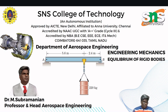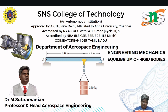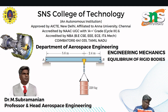Engineers use these principles to ensure structures are stable and capable of withstanding the forces to which they may be subjected. To calculate the reaction force for a fixed beam with a point load acting on it, you can use the principle of equilibrium. The fixed support restrains both translation and rotation. Here is the step-by-step procedure.